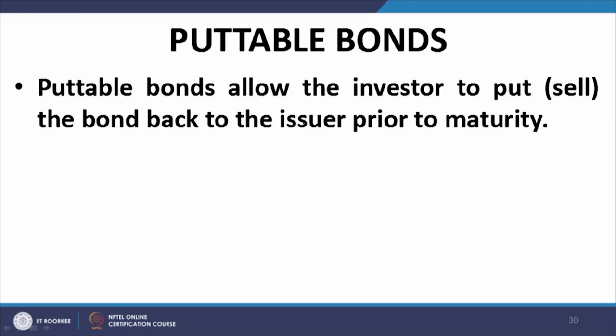Putable bonds give the investor — the lender — the right and discretion to return the bonds and recover the money from the issuer as per the terms in the issue document. In callable bonds, the issuer has the discretion to pay back the debt; in putable bonds, the investor has the choice. If the investor so desires, as per the issue document terms, he can return the bonds to the issuer and take back the money he lent.